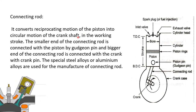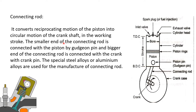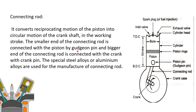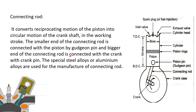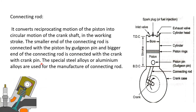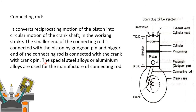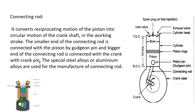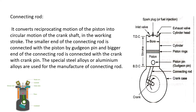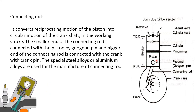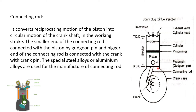The connecting rod connects the piston to the crankshaft and converts reciprocating motion into circular motion. The smaller end of the connecting rod is connected with the piston by a gudgeon pin, and the bigger end is connected with the crank. Special steel alloy or aluminum alloys are used for manufacturing the connecting rod.